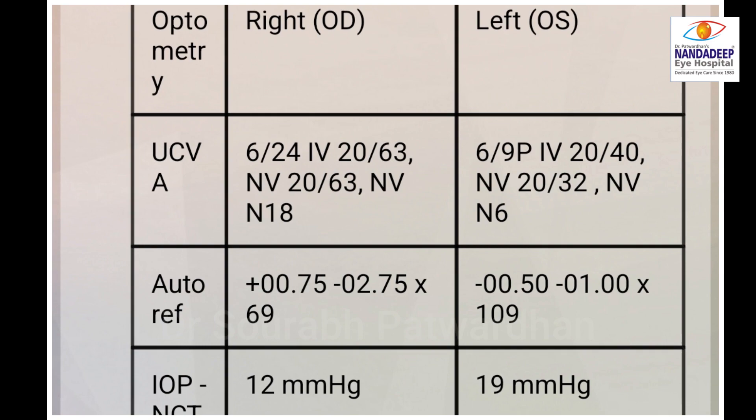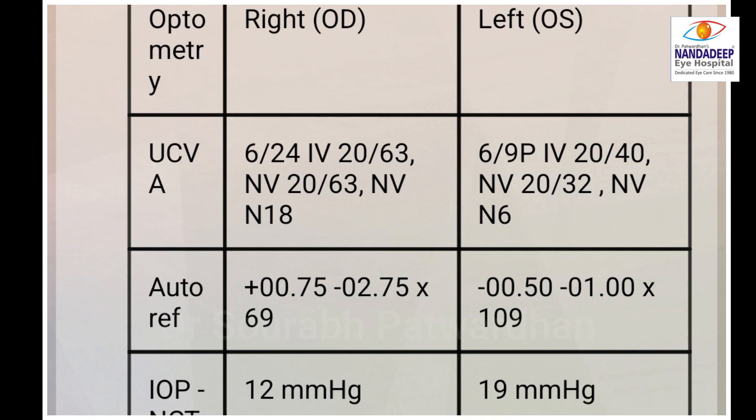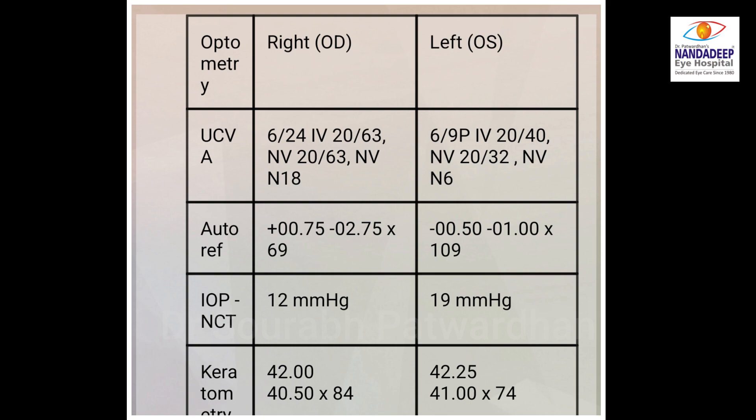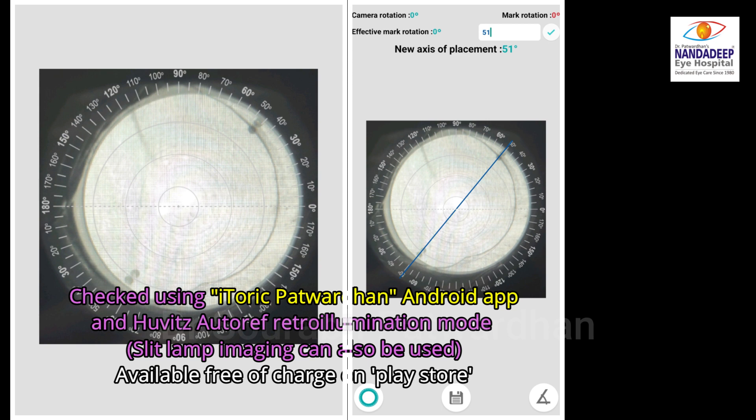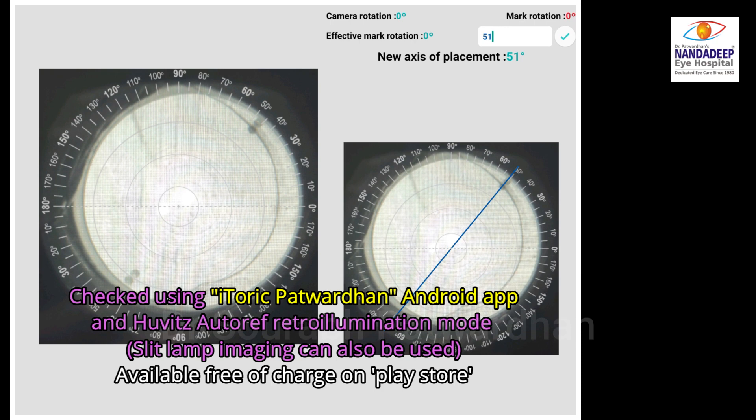To fix this problem, the first step is to measure the exact IOL axis at its current position. I used the iToric Patwardhan Android app, freely available on the Play Store, combined with UV retro-illumination mode to photograph the eye. You can see in the image that 51 degrees is the current IOL axis. You can also use slit-lamp imaging for this purpose.